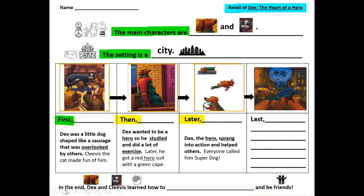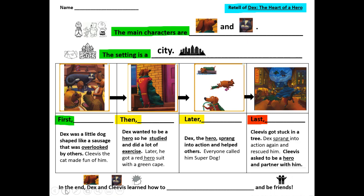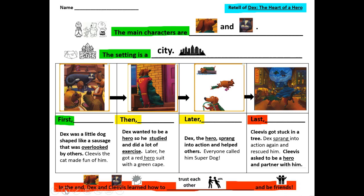Dex the hero sprang into action and helped others. Everyone called him Super Dog. Last, Clevis got stuck in a tree. Dex sprang into action again and rescued him. Clevis asked to be a hero and partner with him. In the end, Dex and Clevis learned how to trust each other and be friends — Dex especially forgave Clevis for being mean to him.